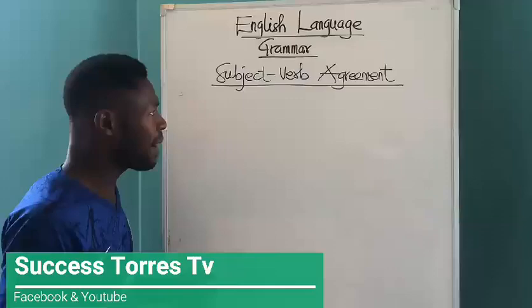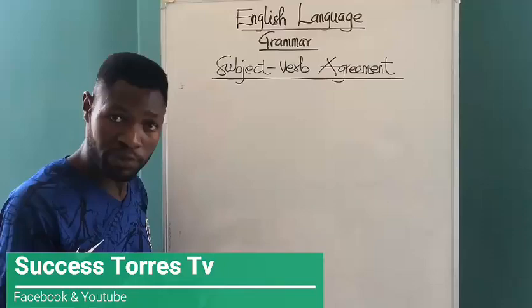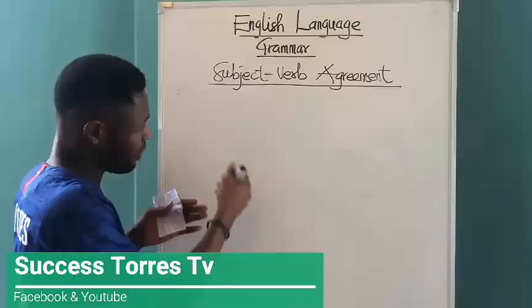So if the subject is singular, the verb should also be singular. If the subject is plural, then the verb should also be plural. That is the agreement we are talking about — that agreement between these two important areas in grammar. Now, what do we mean by singular subject, singular verb, and plural subject, plural verb?